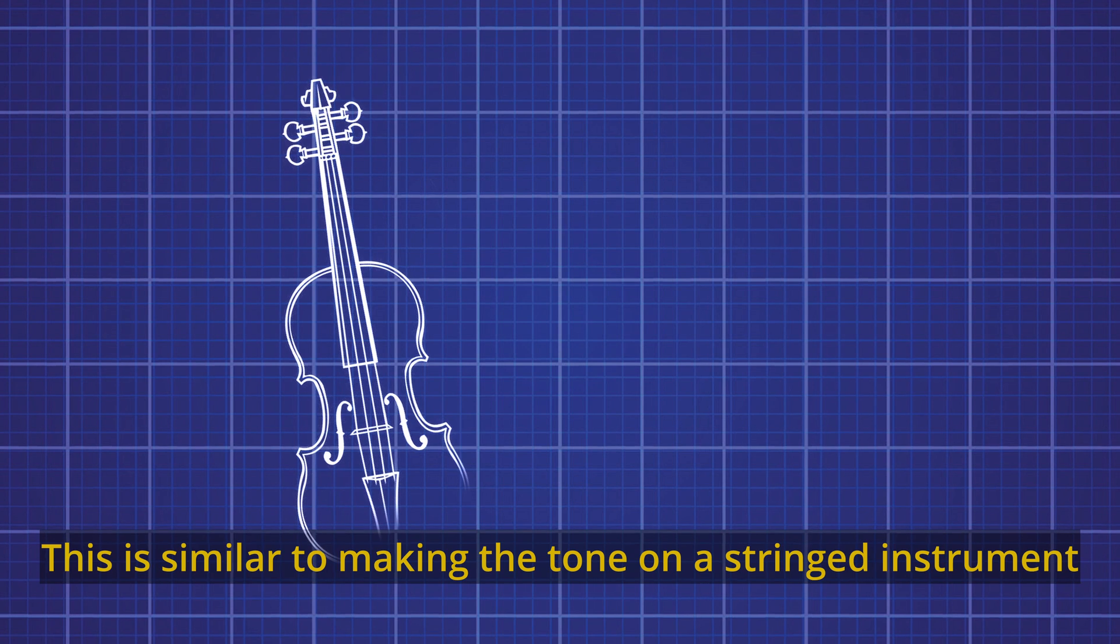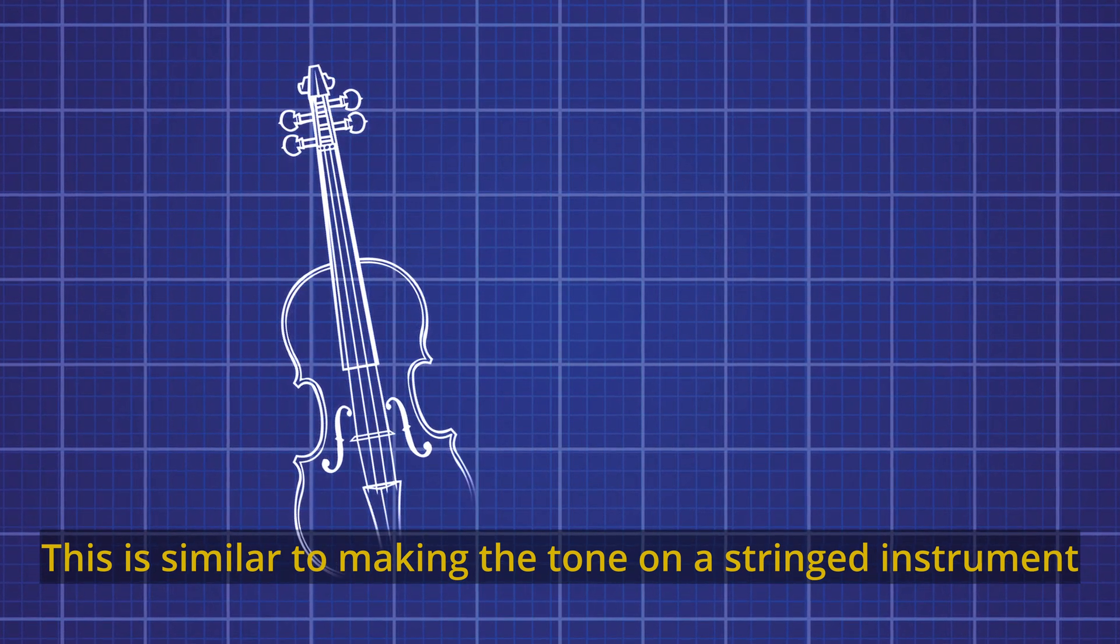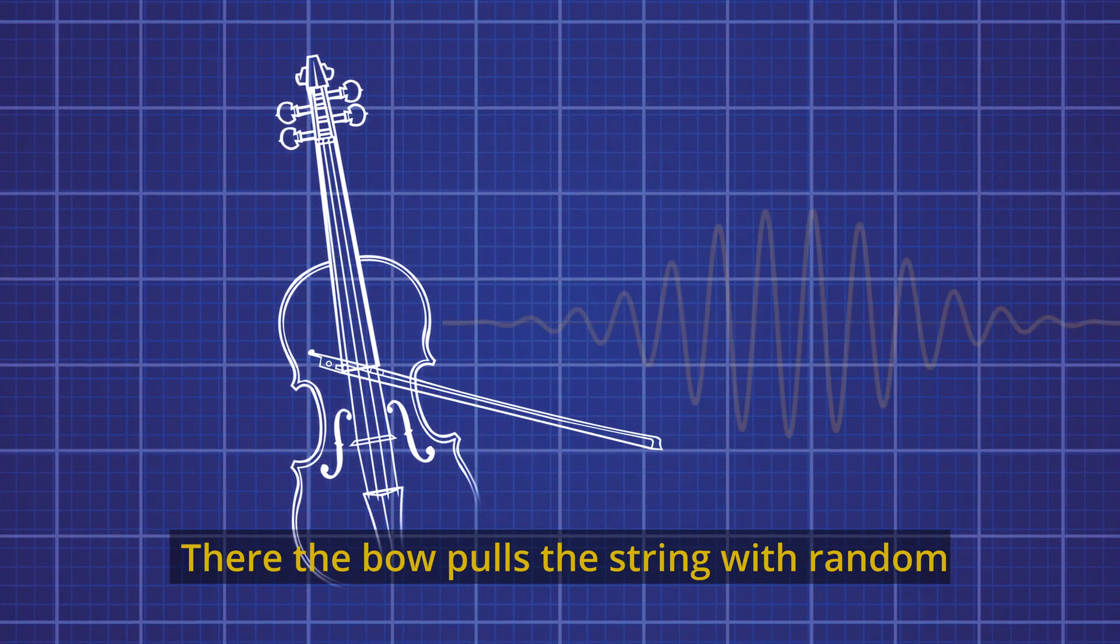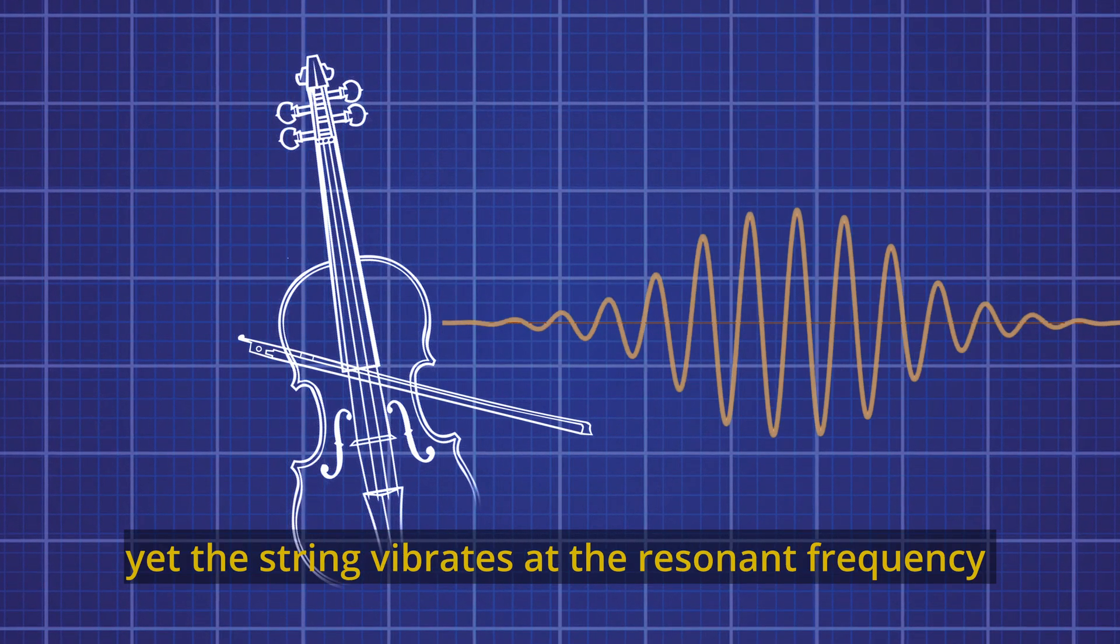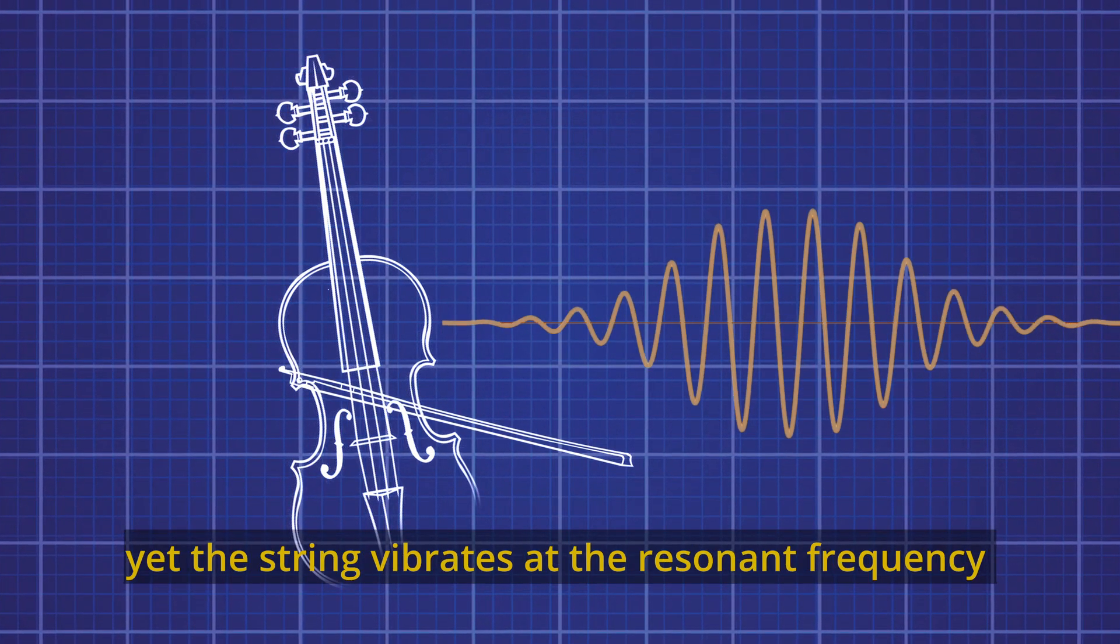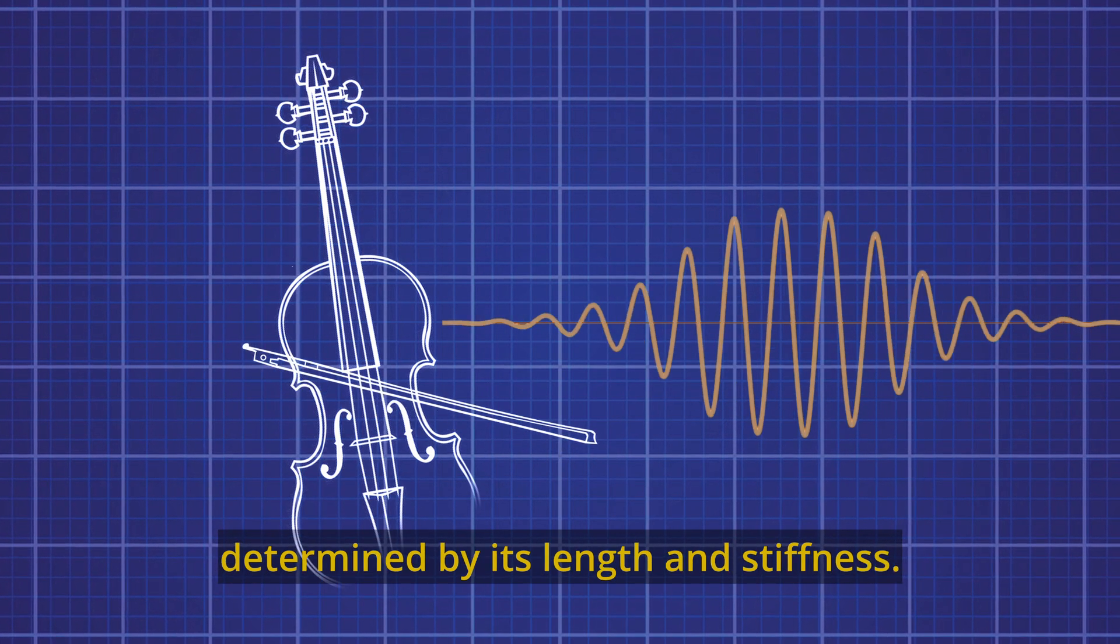This is similar to making the tone on a string instrument. There the bow pulls the string with random and chaotic force, yet the string vibrates at the resonant frequency determined by its length and stiffness.